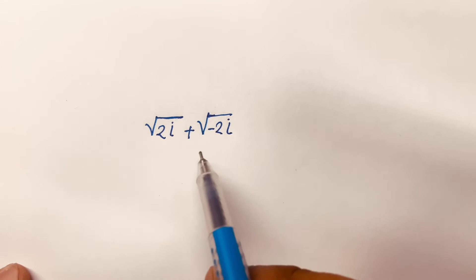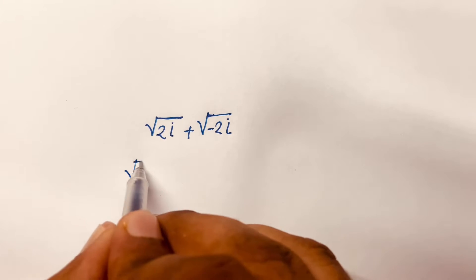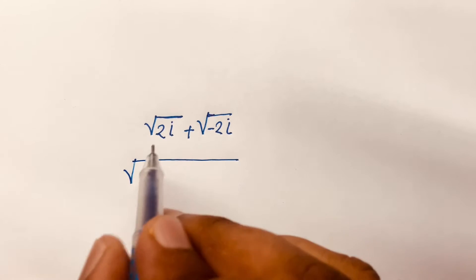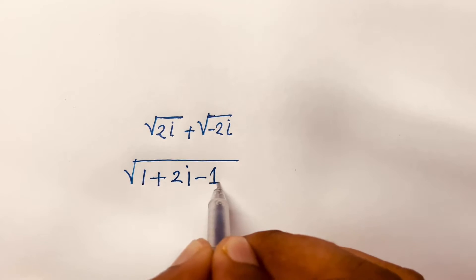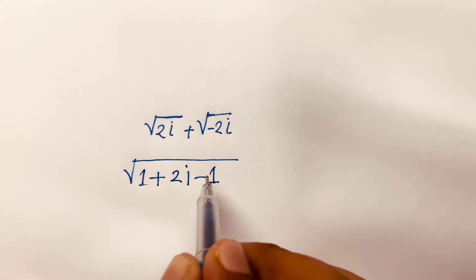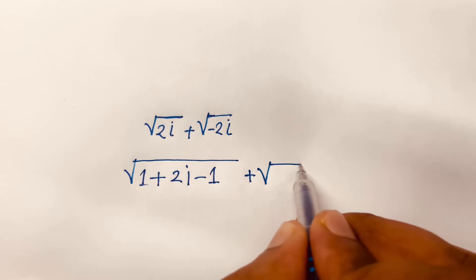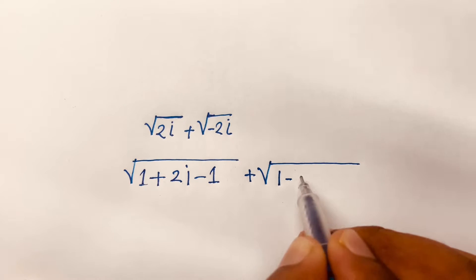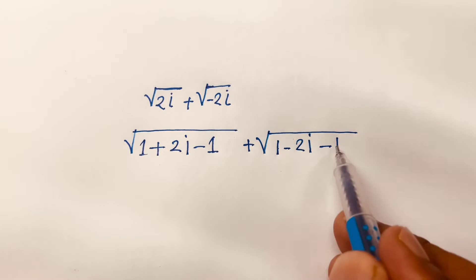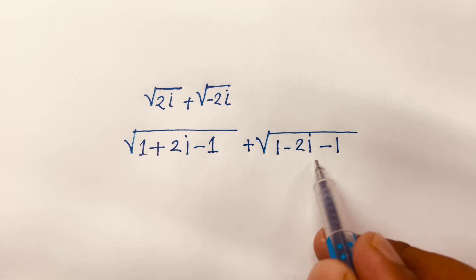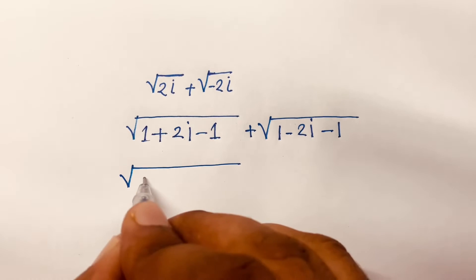How to solve √(2i) + √(-2i). To solve this, rewrite √(2i) as √(1 + 2i - 1), where 1 - 1 = 0, giving 2i. Similarly, rewrite √(-2i) as √(1 - 2i - 1), where 1 - 1 = 0, giving -2i.